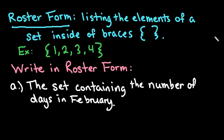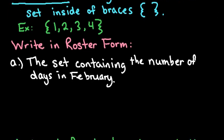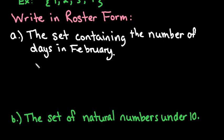The first one is the set containing the number of days in February. We know there are 28 days in February, so we can put our brackets and start with 1, 2, 3. Instead of continuing and writing everything all the way up to 28, we can use an ellipsis to say we're including everything from 3 all the way to 28. By putting the 28 at the end, it tells us where to stop.